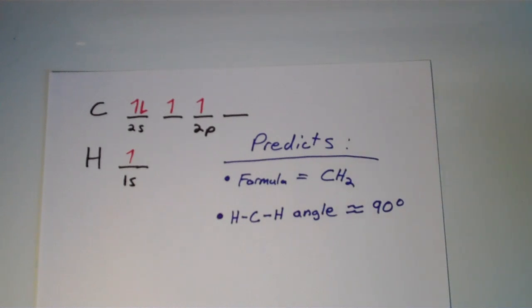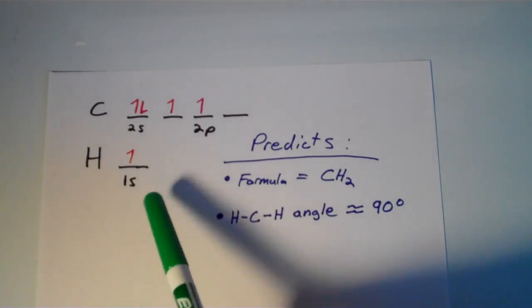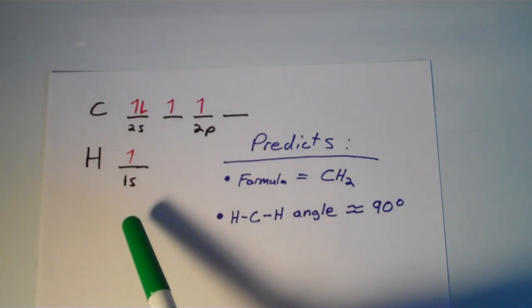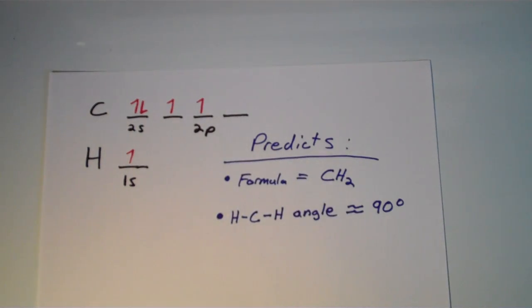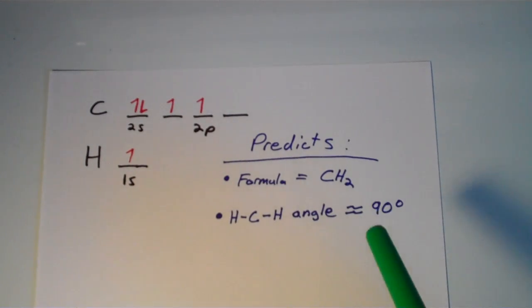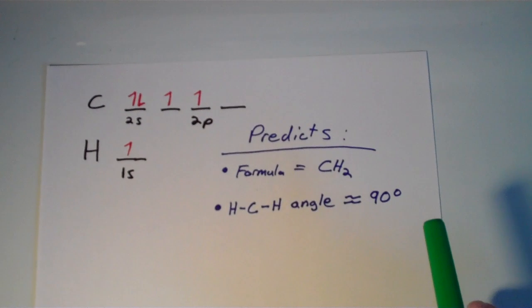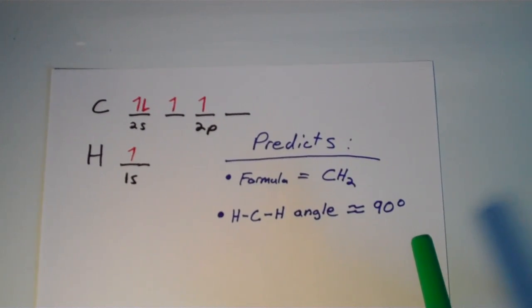So maybe the idea is two hydrogens can come in and two half-filled 1S orbitals from hydrogen can come in and overlap with each of the 2P orbitals on carbon. And that would result in a compound that has the formula CH₂, and it would also result in a bond angle of about 90 degrees. Again, that's just the distance between two P orbitals.